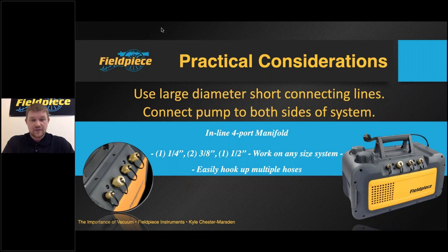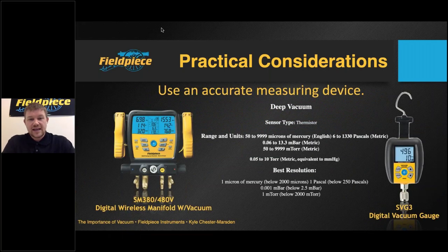Think about it like this: you could have the best vacuum cleaner money can buy with the highest most efficient motor, but if you have a connection the size of a drinking straw on the end of it, all of that extra power and efficiency is non-existent — you're trying to force everything through such a small diameter opening. Finally: use an accurate measuring device. Standalone Torr gauges or micron gauges and digital manifold gauges with integrated vacuum sensors are highly recommended. At Field Piece we offer both the SM380 and SM480 wireless manifold with integrated vacuum sensor, the SM480 model including 3/8 vacuum ports on the manifold itself, allowing large diameter hoses to be used. We also offer the SVG3 digital vacuum gauge with the same high resolution vacuum sensor.